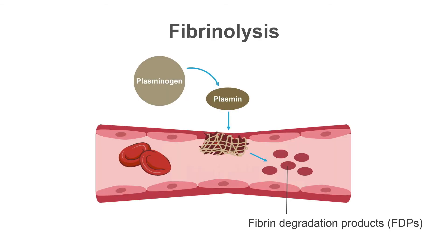Primary fibrinolysis is another unusual cause of bleeding. Normally when there is clot formation, the clot is lysed — this is secondary fibrinolysis. In some individuals, fibrinogen is lysed without clot formation, and that is known as primary fibrinolysis. These patients may bleed.